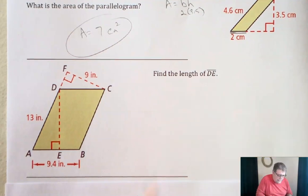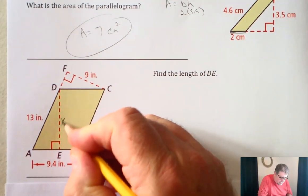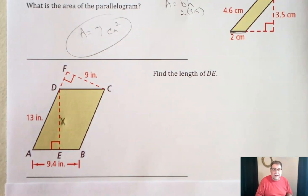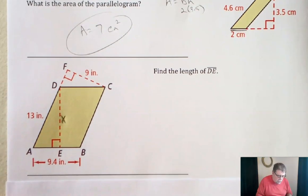It says find the length of DE. So DE is right here. I'm going to actually make it X, so we want to find out the length of X.